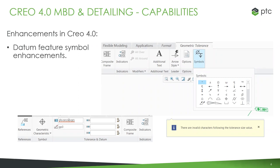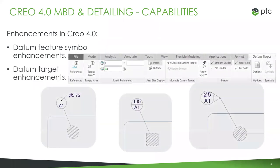We'll talk about the capabilities here briefly. Datum feature symbol enhancements — these are updated to match standards, and Creo now shows you if there are invalid characters with a red squiggly line so it doesn't let you put in something that's just not possible. We also have datum target enhancements, giving you more control — automated options to choose how you want things represented, add elbows, change the display, whether for company standards or industry standards.